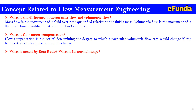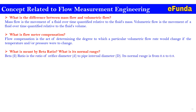What is meant by beta ratio and what is its normal range? Beta ratio is the ratio of orifice diameter to internal pipe diameter. Its range is from 0.4 to 0.8. For this concept, a detailed video has already been created on our channel.